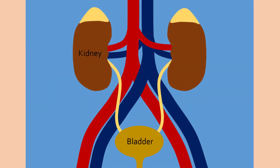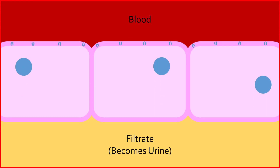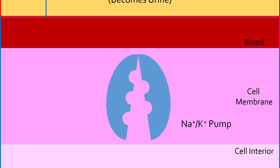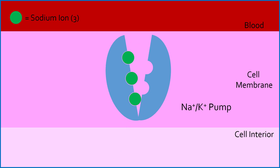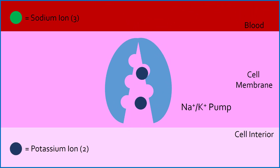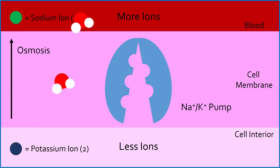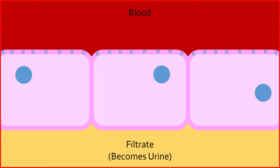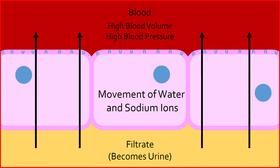Aldosterone is also released from the adrenal gland and is involved in increasing blood pressure. It does this by increasing the number of sodium-potassium pumps in the membrane of renal cells that lie between blood vessels and the tubes where urine passes through. These pumps transport three sodium ions out of the cell and into the blood in exchange for two potassium ions into the cell. Since there is a net gain of ions into the blood, water flows in through osmosis, increasing blood volume and blood pressure.